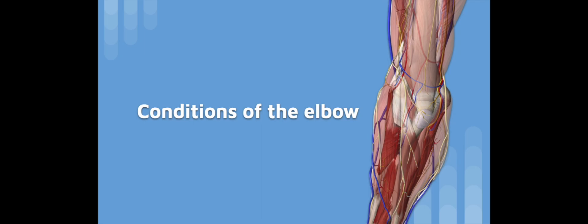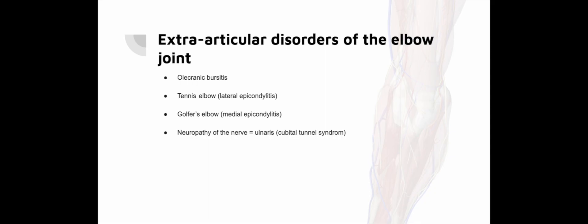Conditions of the elbow: The elbow joint consists of the distal humerus, the ulna and the radius. The ulno-humeral part of the joint allows flexion and extension, the radio-ulnar part mainly rotation, pro- and supination, while the radio-humeral joint mainly serves as a support point for the radius. Many muscles necessary for hand and wrist function are inserted around the elbow, which can cause a relatively large number of overuse injuries. Extra-articular disorders of the elbow comprise olecranon bursitis, tennis elbow, golfer's elbow and cubital tunnel syndrome.